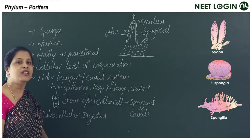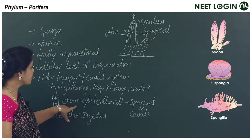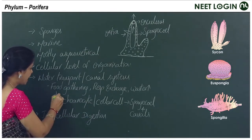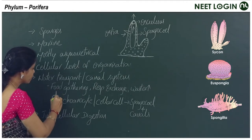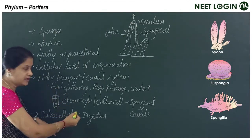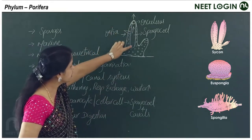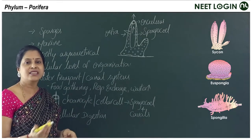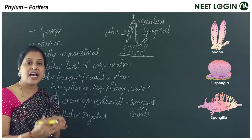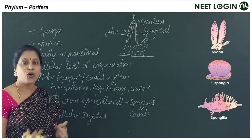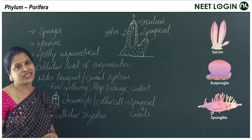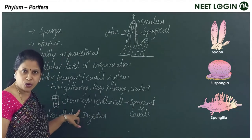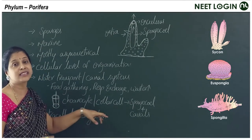The next important feature is choanocytes — the collar cells. They have a collar-like structure with a flagella-like structure. Choanocytes line the spongocoel and canals. An important exam question: which cells line the spongocoel or canals? The answer is choanocytes or collar cells.